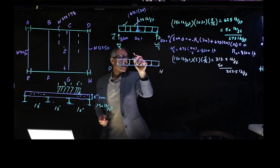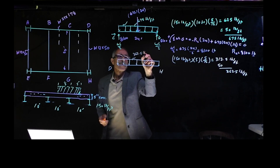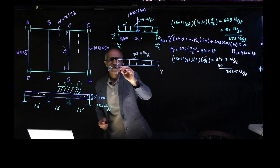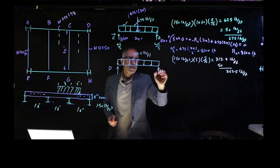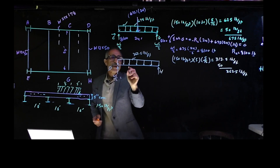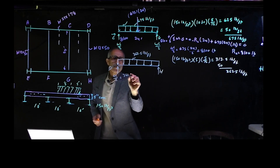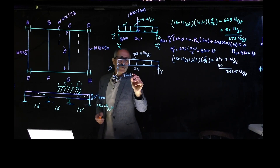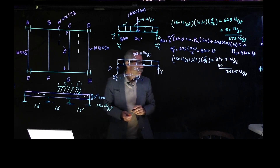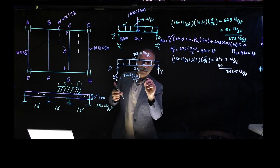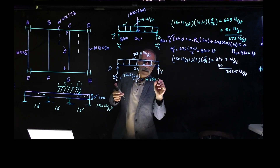Using the reaction formula wL/2: 362.5 × 24 / 2 = 4350 pounds reaction at each end of the outside beam.